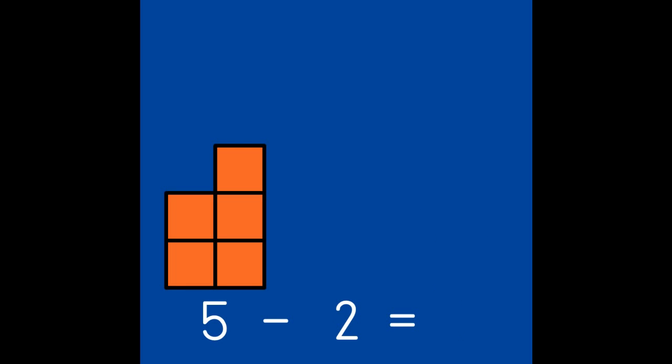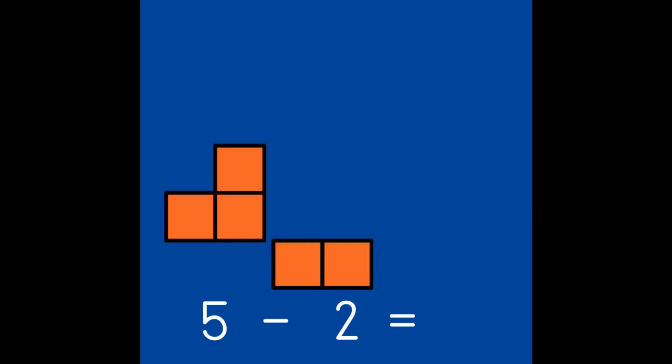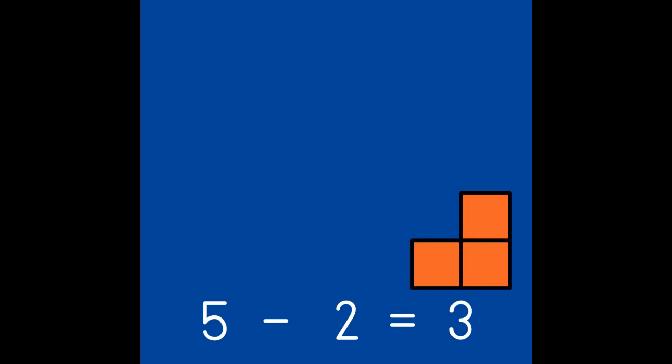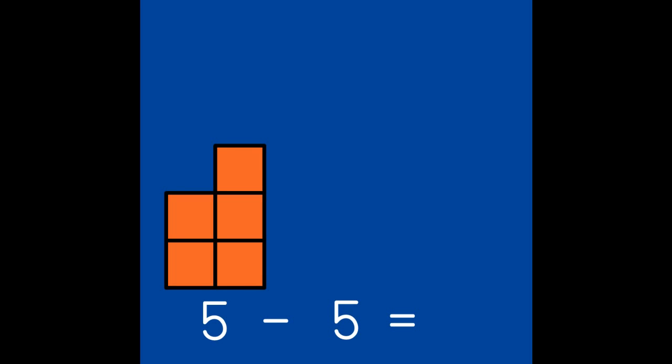Let's practice taking 1 partner away and see how many are left. What if we have 5 and we take away 4? 1 is left. If we have 5 and take away 2, how many will be left? 3. 5 take away 5 leaves 0.